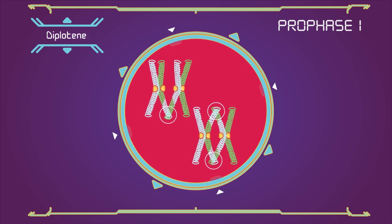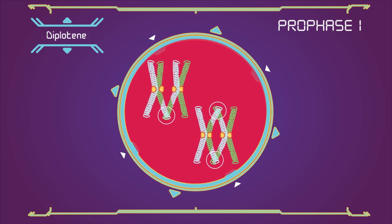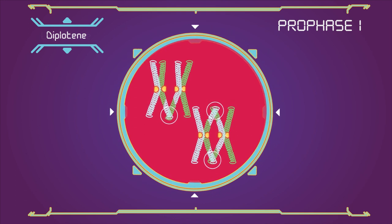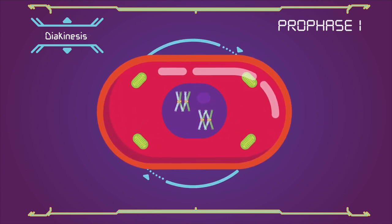The regions where crossing over occurred, the chiasmata remain on the chromosomes until they are at the transition to anaphase 1. Diakinesis: It closely resembles prometaphase of mitosis.